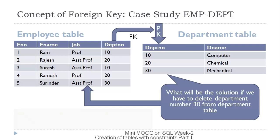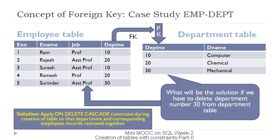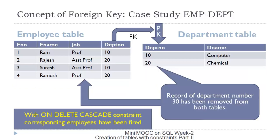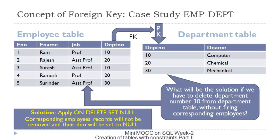The solution is the ON DELETE CASCADE constraint, where department number 30 will be removed from both the department table and the employee table at the same time. If we issue the delete statement with ON DELETE CASCADE, department number 30 will be removed from both the department table and the employee table. This means if a department closes, the corresponding employees will be removed as well.